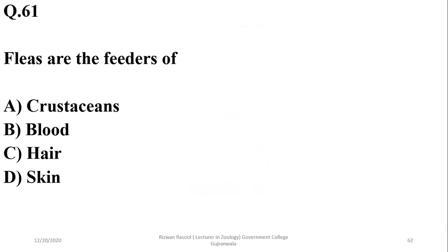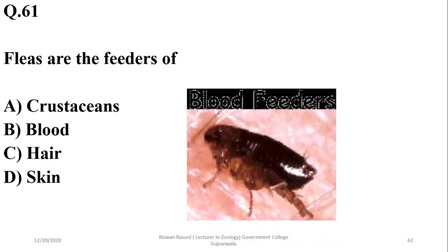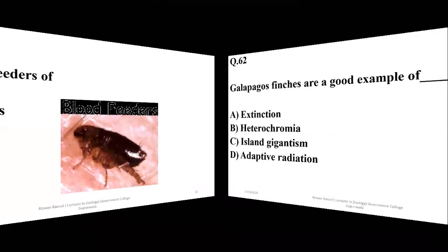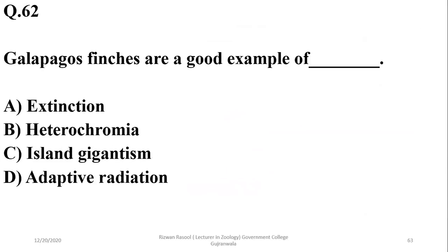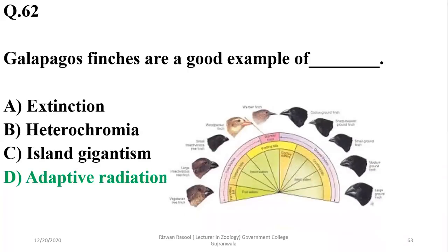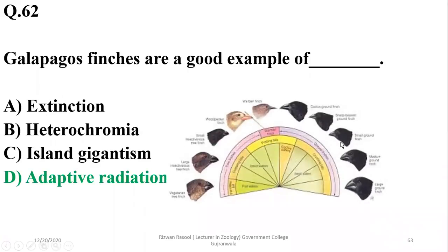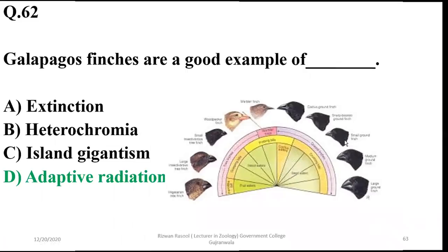Question 61: Fleas are feeders of blood, so B. Question 62: Galapagos finches are a good example of adaptive radiation — a single species occupying different habitats and adapting accordingly is known as adaptive radiation.